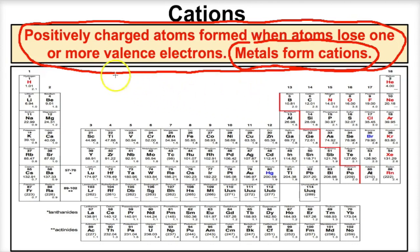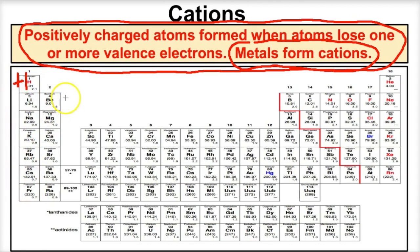Everything to the left of the stair-step line are metals — except hydrogen, which is placed there because it has a tendency to behave like a cation. All metals, when reacting with nonmetals, lose one or more electrons and form positively charged ions called cations. Group one, the alkali metals, all lose one electron and form positive-one ions. Group two, the alkaline earth metals, lose two electrons and form two-plus ions.